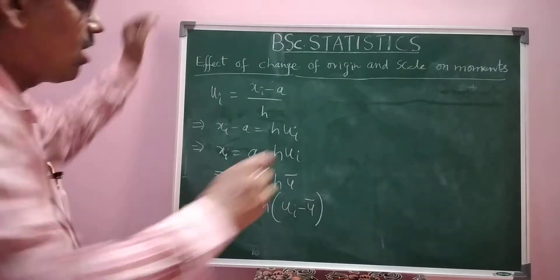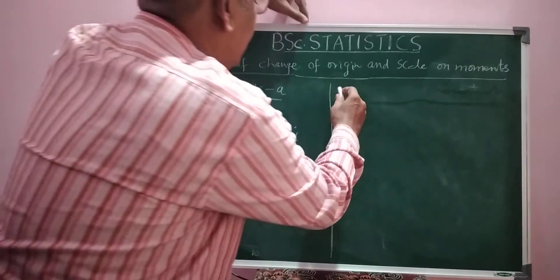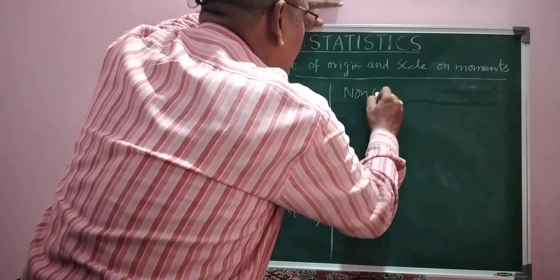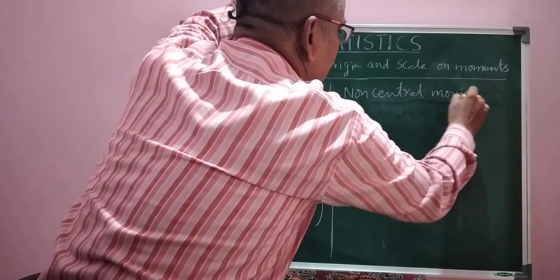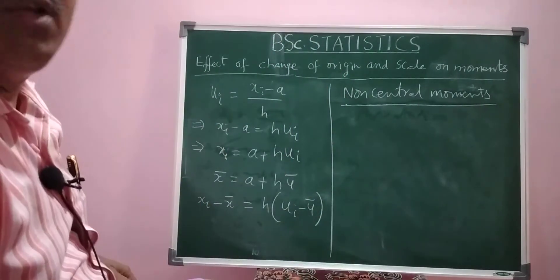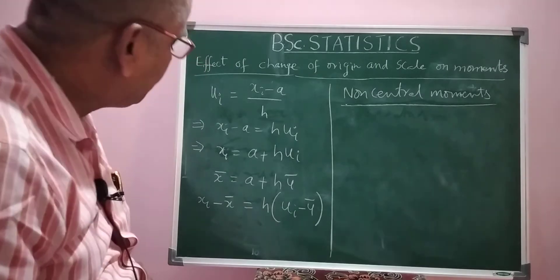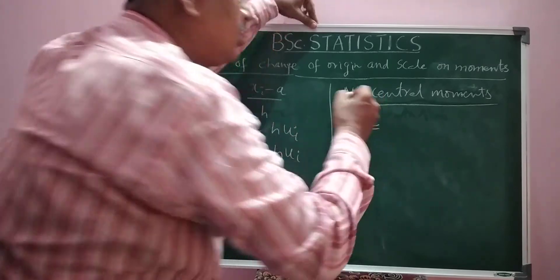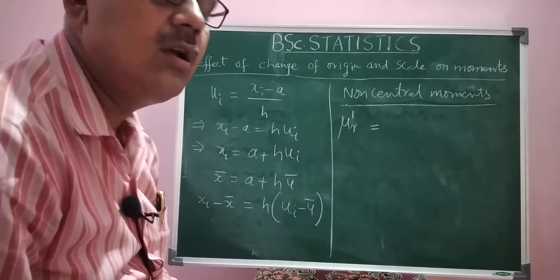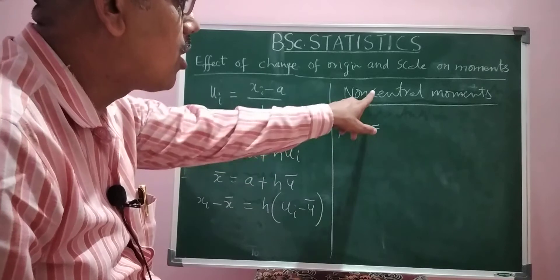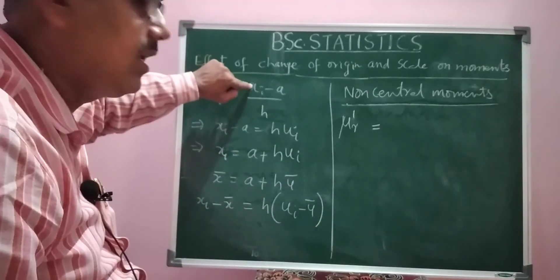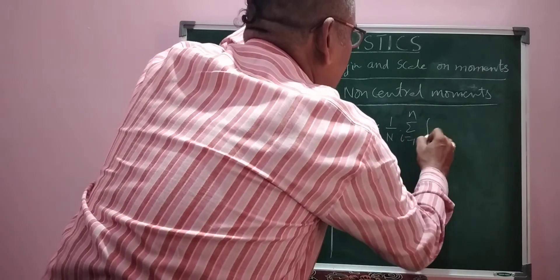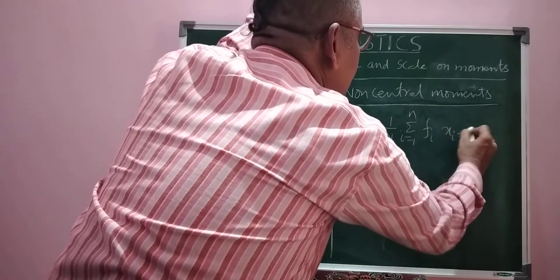Now I consider non-central moments first — the effect of change of origin and scale on non-central moments. The formula for non-central moments μ'_r for the variable x is: 1 by N, summation i equals 1 to n, f_i into (x_i minus a) to the power r.